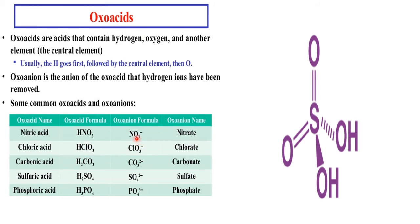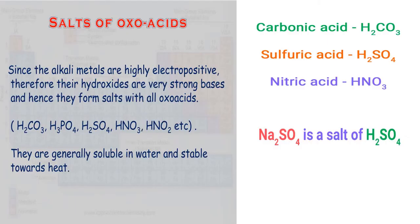They contain oxoanions — after giving the hydrogen, NO₃⁻ and similar ions become oxoanions. When these oxoacids react with the bases of alkali metals, they form respective salts. Salts of oxoacids means: when oxoacids react with the bases of this family, the salt formed is called a salt of oxoacid. The best example is sodium sulfate, formed from the oxoacid sulfuric acid and sodium hydroxide.